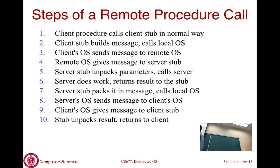The steps for a client invoking a remote procedure: the client calls the remote procedure; control transfers to stub code, which recognizes it's a remote function; the stub constructs a message and calls the OS; the OS sends it to the remote OS; the remote OS passes it to the server stub; the stub unpacks parameters and calls the server procedure; the server executes it and sends the result back through the reverse path.